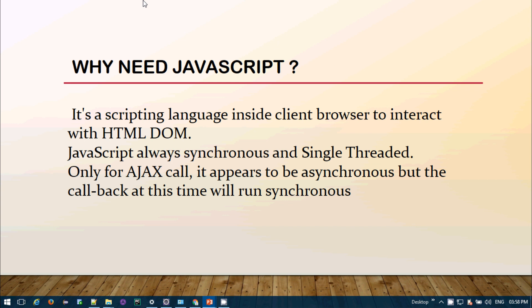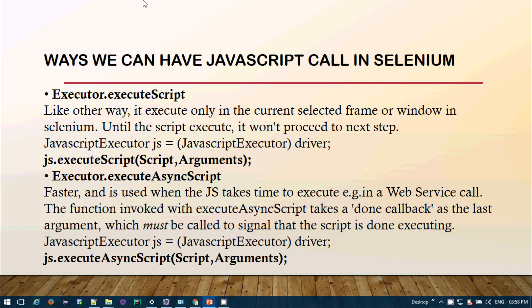There are two ways you can implement JavaScript in Selenium. First is executeScript and second is executeAsyncScript. For executeScript, you cast the driver interface to JavascriptExecutor and call js.executeScript with the script and arguments. It will execute only in the current selected frame or window, and it won't proceed to the next step until the script completes.